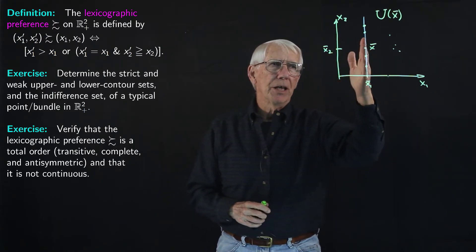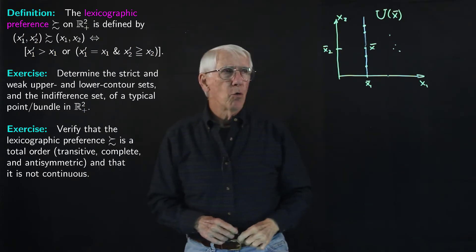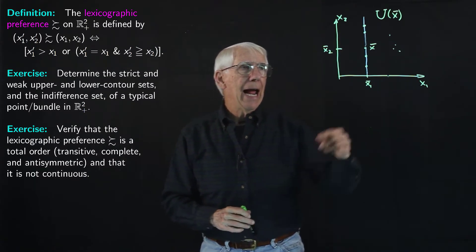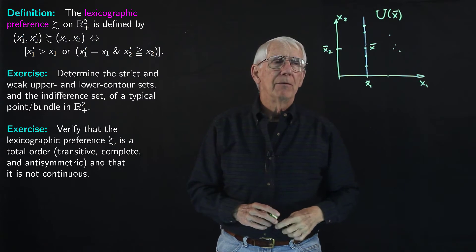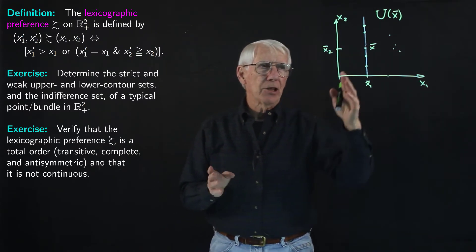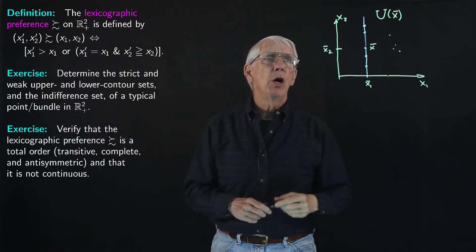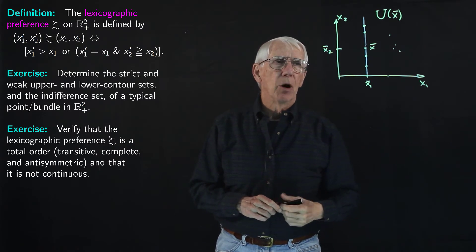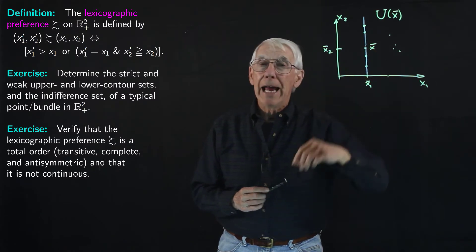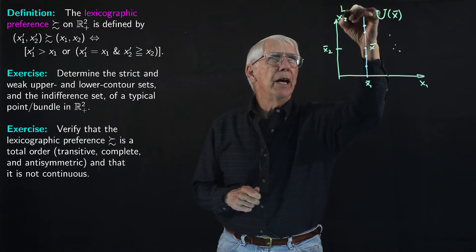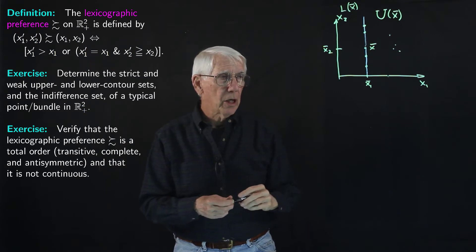What about the weak lower contour set of X-bar? The same argument tells us that the bundles strictly to the left of the blue line are worse than X-bar to this consumer, and all the points on the blue line below X-bar are as bad as X-bar — X-bar is at least as good as them. And of course, X-bar is at least as good as itself. So the lower contour set of X-bar is all the points to the left, all the points on the blue line below X-bar, and X-bar itself. I'll use L of X-bar for the weak lower contour set of X-bar.